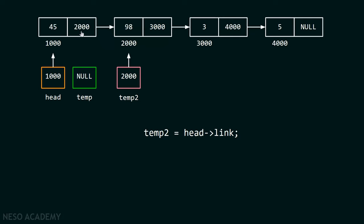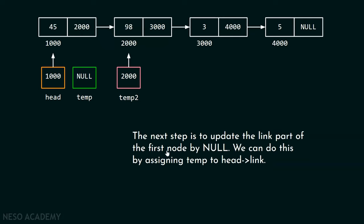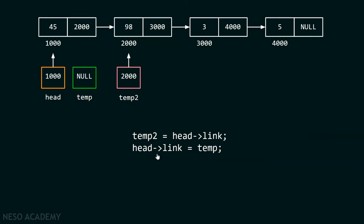Now we can easily update the link part of the first node. We assign temp2 = head.link to save the reference to the second node, and then head.link = temp (which is null) to update the first node's link. The link part of the first node is now null because temp is holding null.